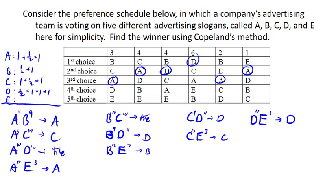So if we add up all the points that A's earned. A has earned 2 and 1 half points. B has earned 1 and 1 half points. C has earned 2 and 1 half points. And D has earned 3 and 1 half points. E has earned 0 points. And so under Copeland's method, D is the winner for this election.